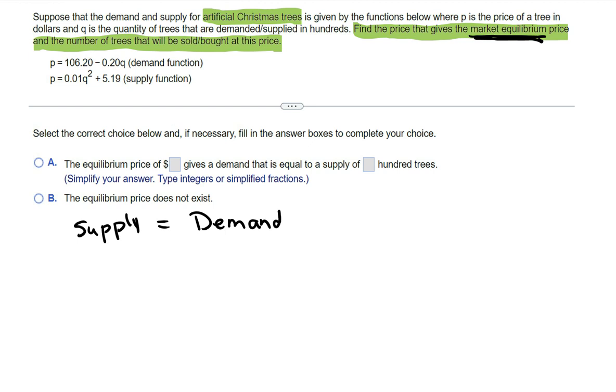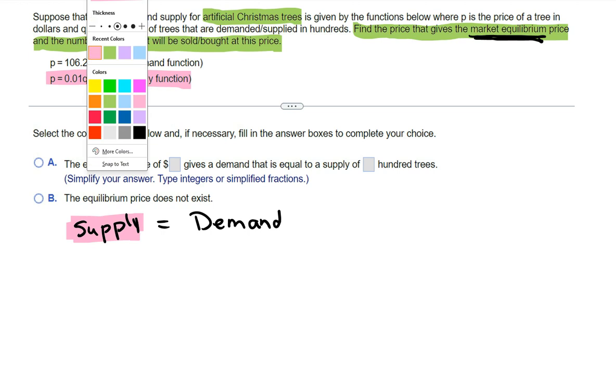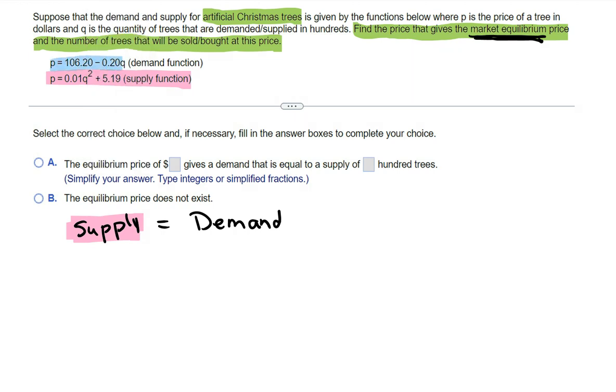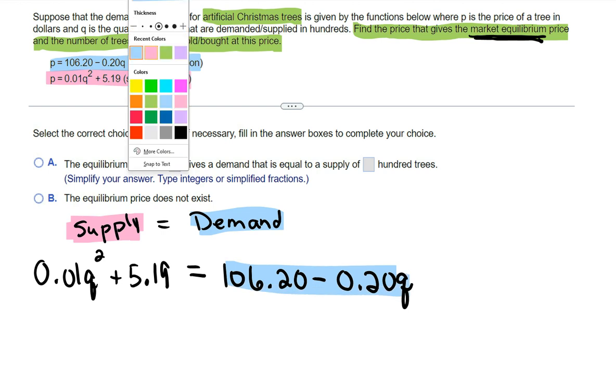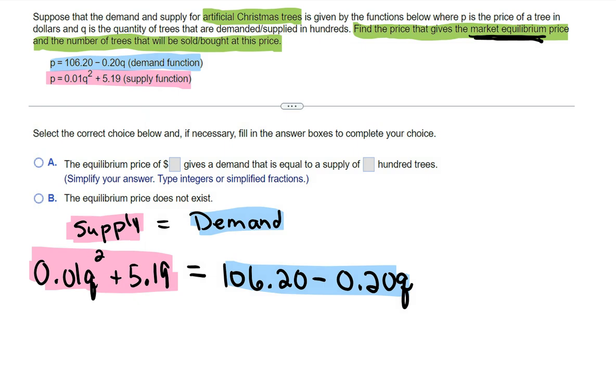And then up here, they gave me a supply function. I'm going to put it here. And they also gave me the demand function, which will go on the other side of the equation. So this will be 0.01Q squared plus 5.19, and then that will equal the 106.20 minus 0.20Q. So here's demand, here's supply, and we are looking for where they're equal. Equilibrium.